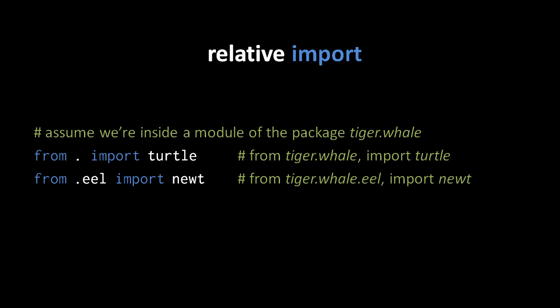The last thing to discuss about imports is what's called a relative import, which is an import that features a dot used standalone where the module usually goes in a from import, or the dot is prefixed to the partial name of a package in the same spot in a from import. The idea of a relative import is that we're telling Python where to find our module relative to the current module. So assuming we're inside a module of the package tiger.whale, from . import turtle means import the module turtle in the package tiger.whale. And from .eel import newt means from tiger.whale.eel import newt.